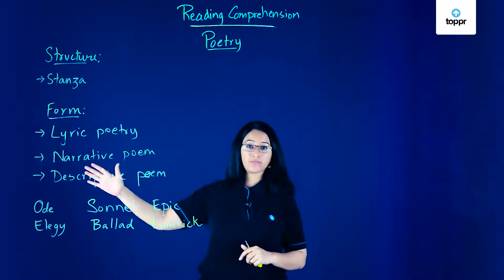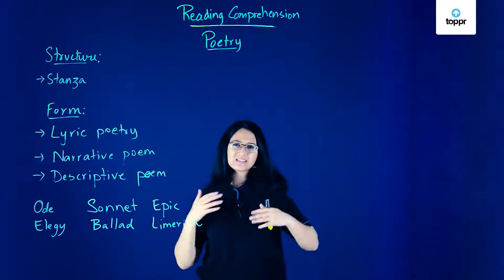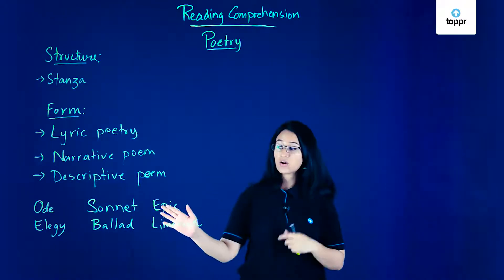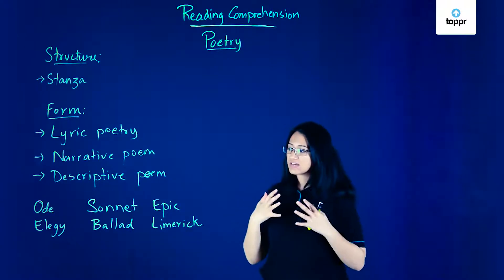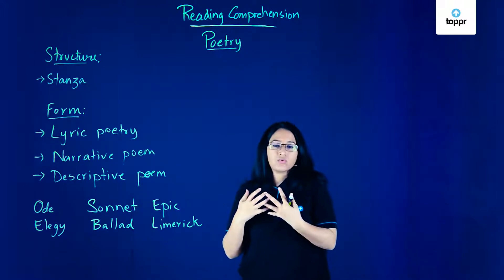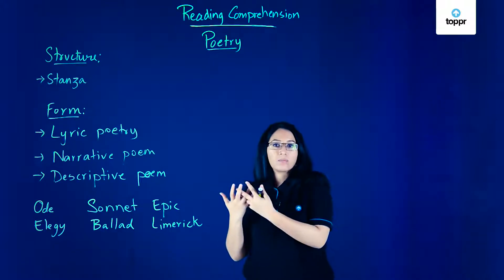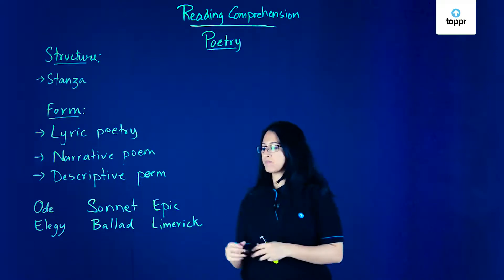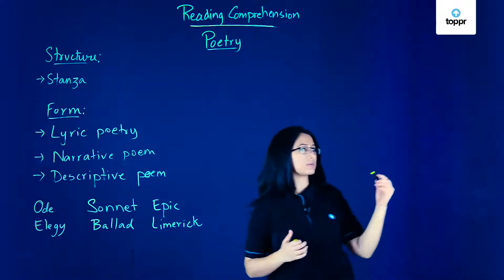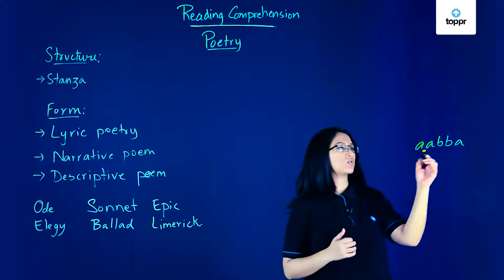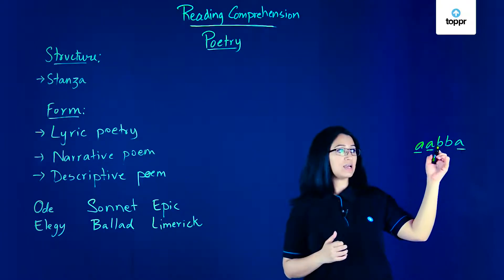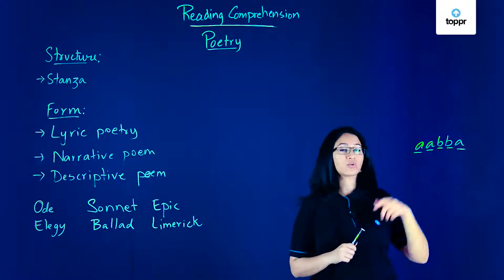A ballad is a type of narrative poem — it tells a story and has a sing-songy, rhythmic pattern, so it can actually be sung. An epic is also a narrative poem, written about the adventures or achievements of a hero in a very formal or celebratory tone. A limerick has a fixed structure with a specific rhyme scheme of A, A, B, B, A — the first two lines and the last fifth line rhyme with each other, while the third and fourth lines rhyme together.